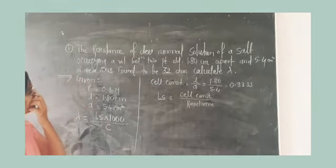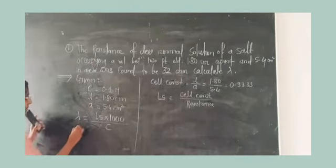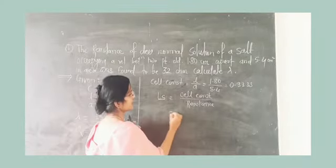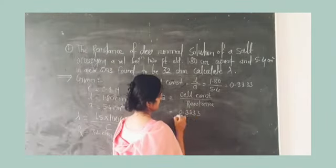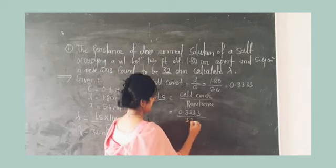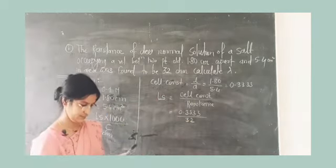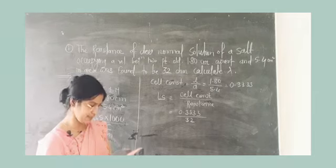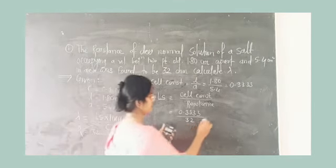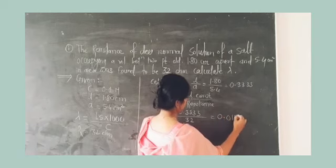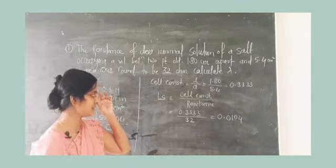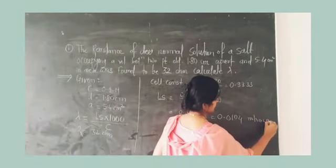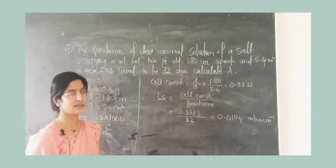Now specific conductance is cell constant upon resistance. I will get the answer of specific conductance, that is 0.0104. What is the unit of specific conductance? Ohm inverse per centimeter, or mho per centimeter. This is the answer for specific conductance.